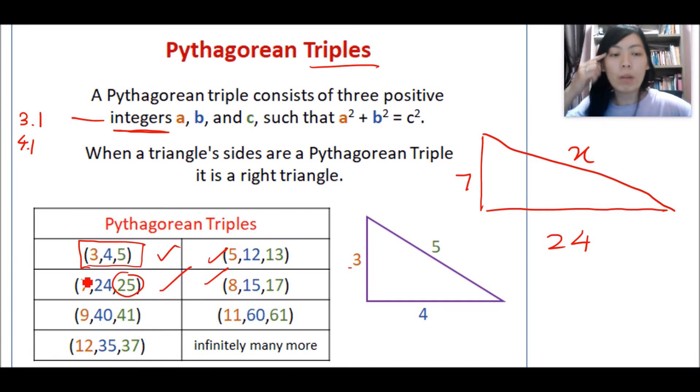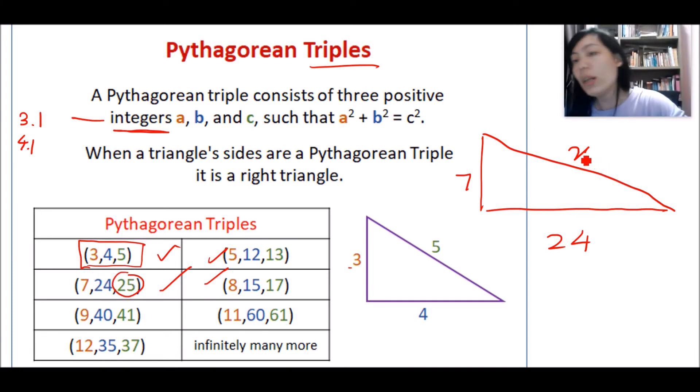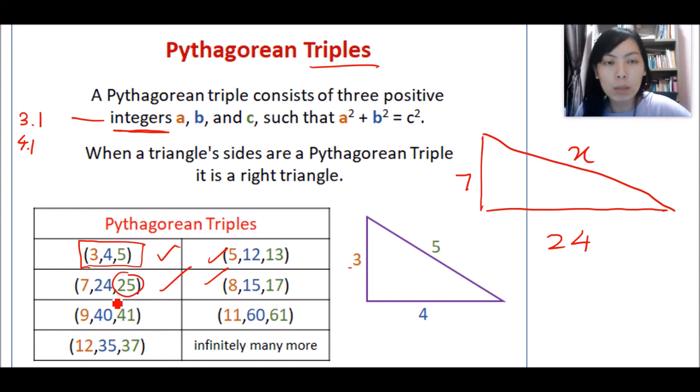Why 25? Because you have memorized the list of triples: 7, 24, 25. So without using a calculator, I know that this is 25 because it is part of the Pythagorean triples.